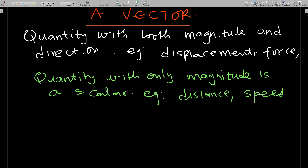When we talk about a vector, a vector is a quantity with both magnitude and direction. The important words here are magnitude and direction. Examples of such quantities are displacement, force, velocity, momentum, and others you can think of.